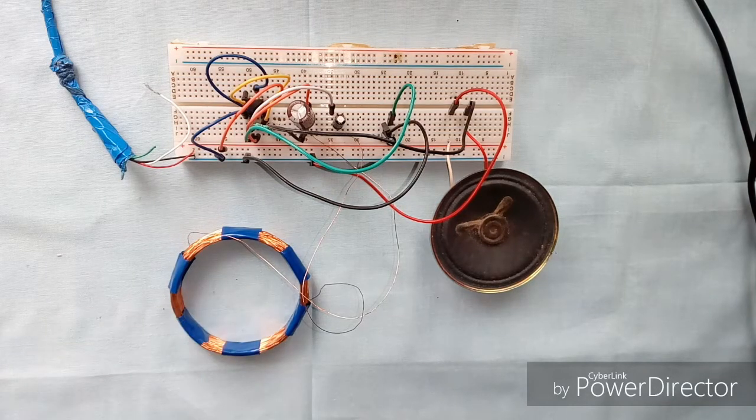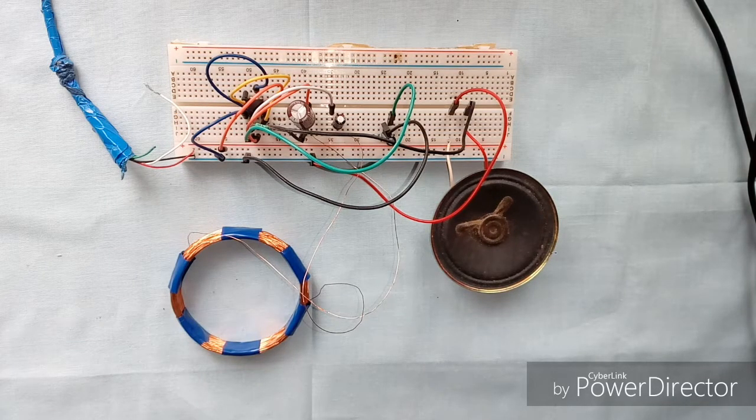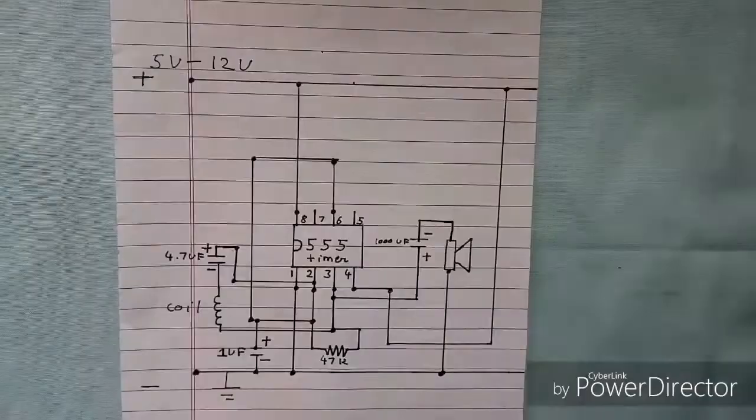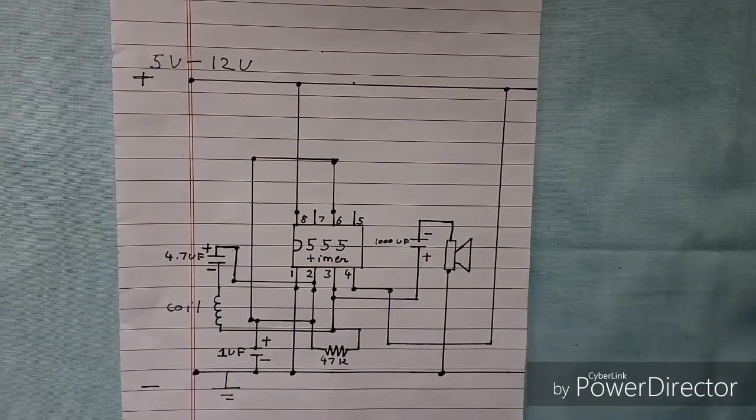As you can see, there is a little change in the sound. So in this way our metal detector is going to work. Before going into detail concerning the wiring, first let's have a look at the circuit.